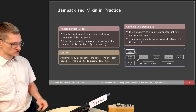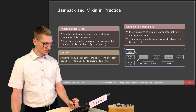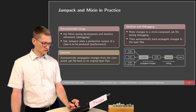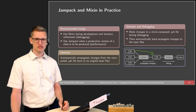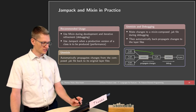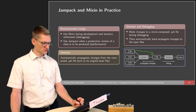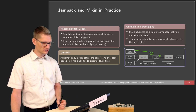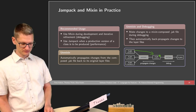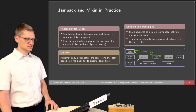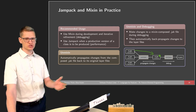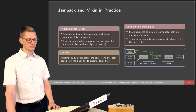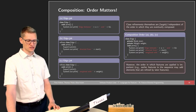Our recommendation in practice: use Mixin for debugging, then Jampeg for a production system where performance matters more. You can use Unmixin during debugging to change something in the generated file seen by the debugger, and then propagate those changes back in Jampeg. With Jampeg, the connection showing where the features and code came from is not so easy to access anymore.